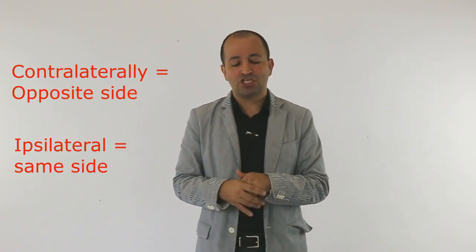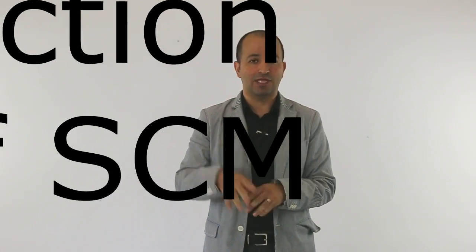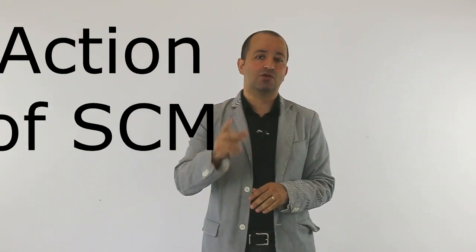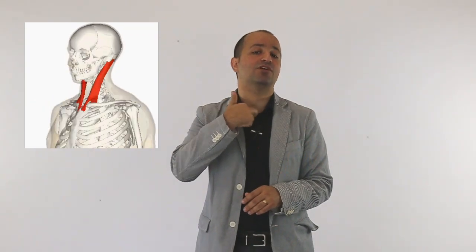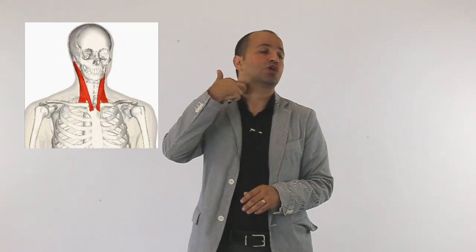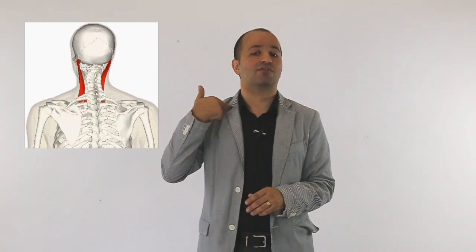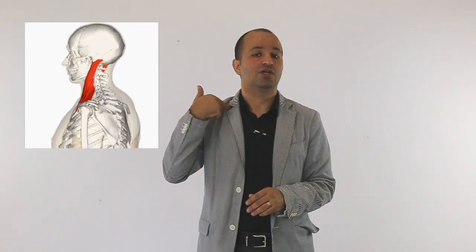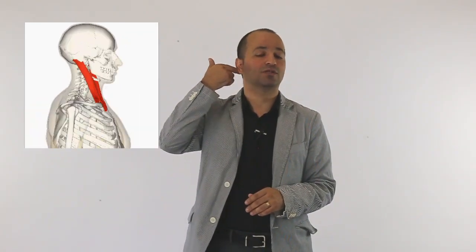The action of the SCM, or sternocleidomastoid — sternocleidomastoid has two heads. One head starts from the sternum, starts from the center, and goes up to the neck. The other head starts from the clavicle, is more on the side, and goes to the neck.